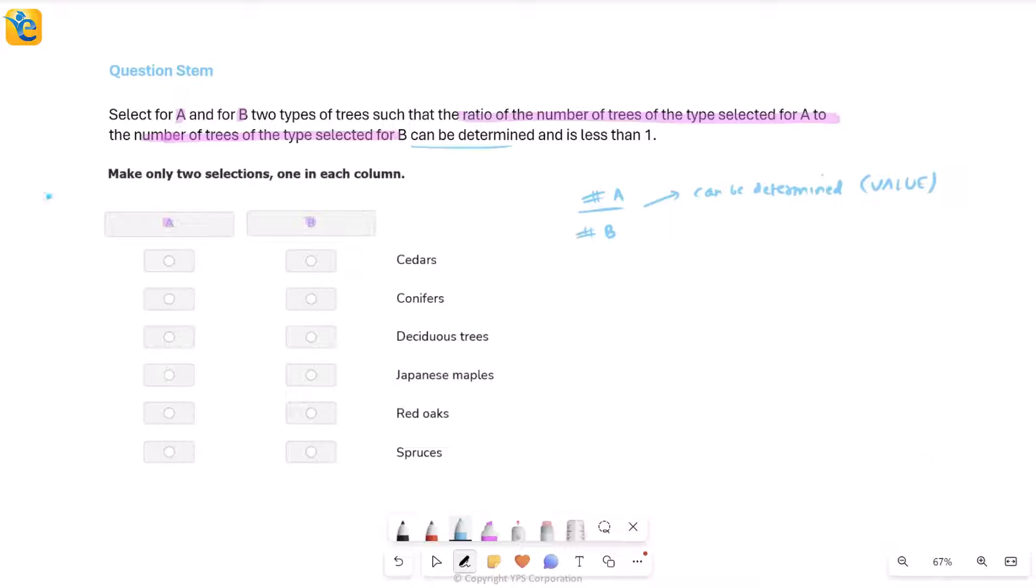Second, this ratio should be less than one. At least from the less than one part, I can already understand that it will be less than one if this number A is less than number of trees in B. That's one inference I can draw already.